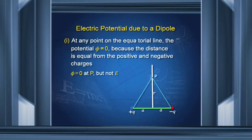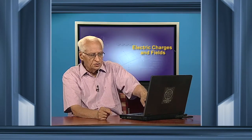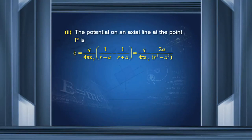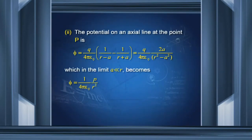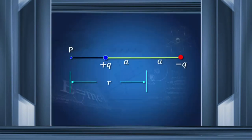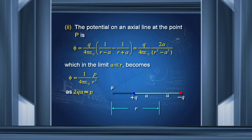Now we take a point P along the axis of the dipole. The distance from +Q to P is r minus a, and from −Q to P is r plus a. The potential due to +Q is Q/(4πε₀) × 1/(r−a), and due to −Q it is −Q/(4πε₀) × 1/(r+a). Adding them, in the limit where a ≪ r and using 2aQ = P (the dipole moment), the potential is (1/4πε₀)(P/r²).